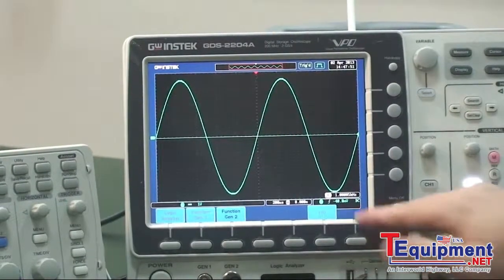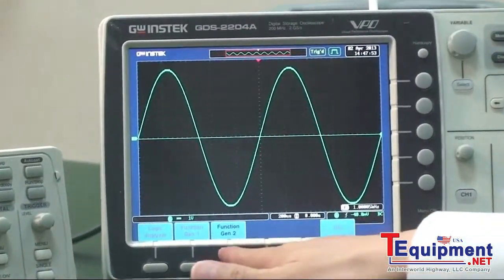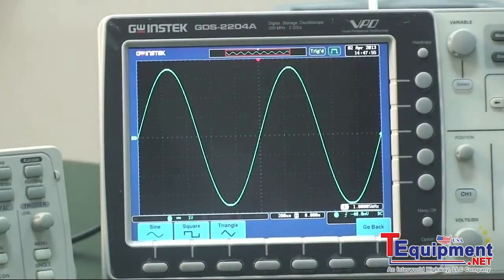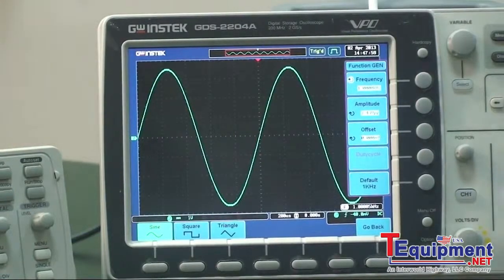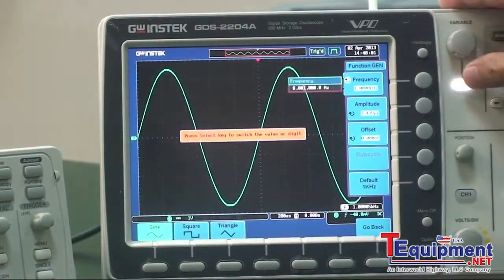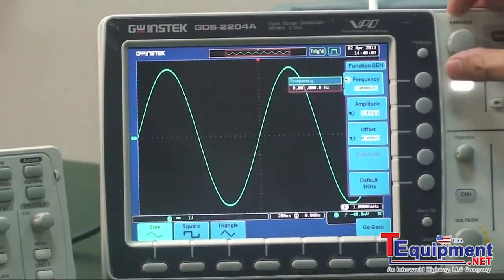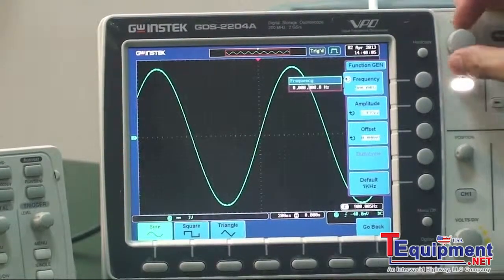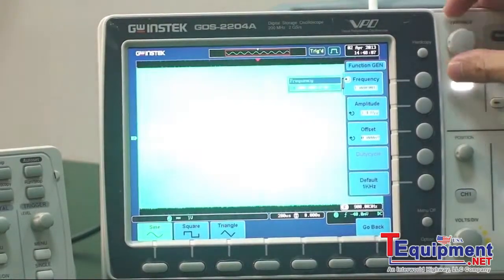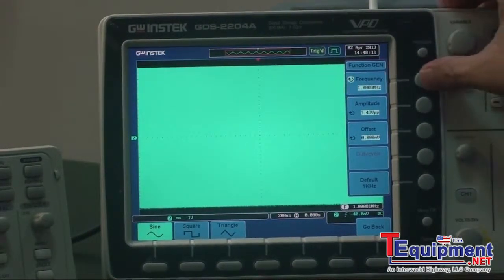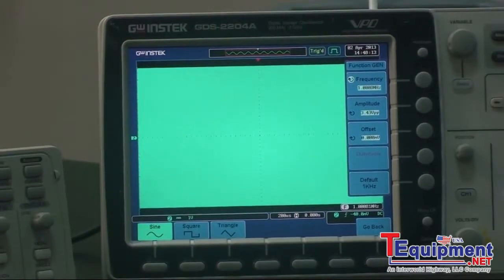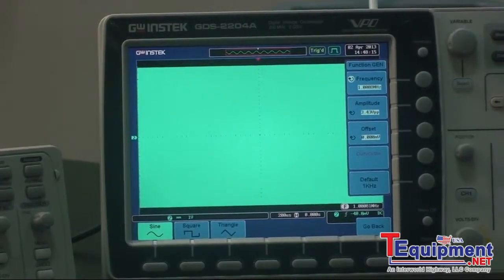Press option, select function generator 2, select sine wave, and set frequency to 1 megahertz. Set time division to 500 nanoseconds per division.